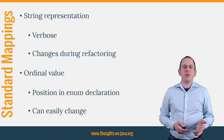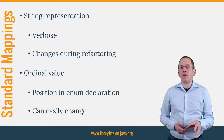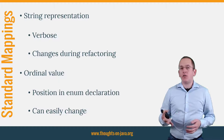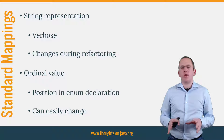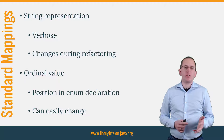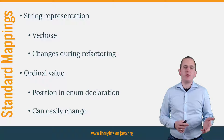JPA and Hibernate provide 2 standard options to map an enum to a database column. You can either use its string representation or its ordinal value. Both approaches have their drawbacks. The string representation is verbose and the renaming of an enum value requires you to also update your database.